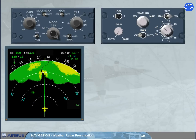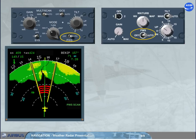This is the normal setting. In addition, there is a PWS switch. When in auto, allows the predictive wind shear system to generate appropriate visual and oral alerts. When PWS is active, the tilt angle indication is replaced by PWS scan on the ND.